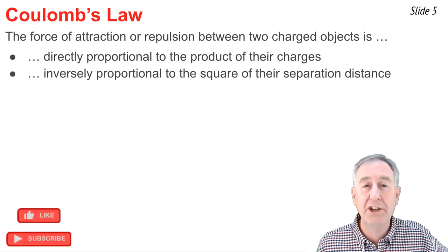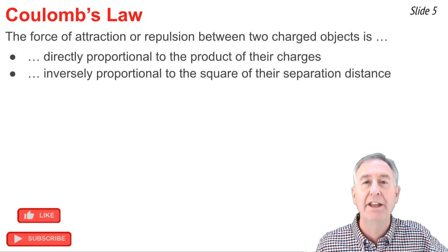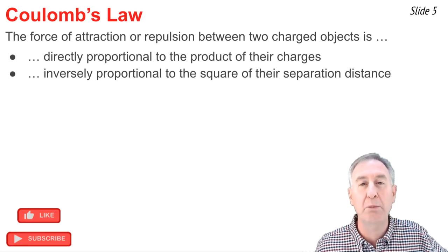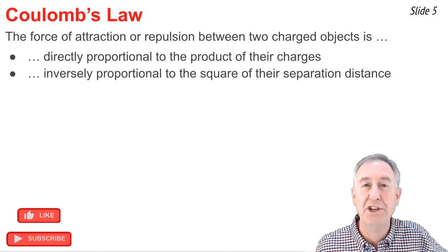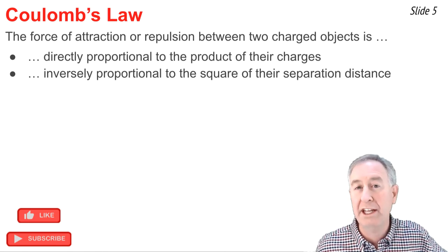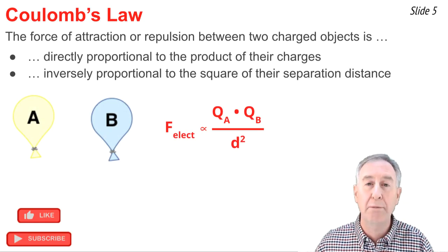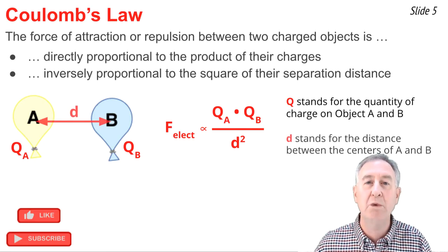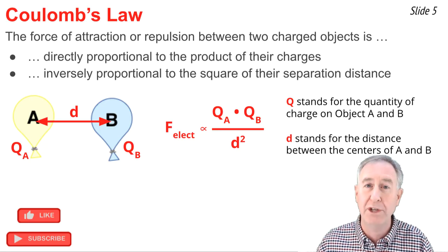Coulomb's law expresses the relationship between the electric force and the variables that affect it. The law can be stated like this. The electric force between two charged objects is directly proportional to the product of their charges and inversely proportional to the separation distance. This proportionality statement can be expressed like this. Here, Q represents the quantity of charge on object A and object B, and D represents the separation distance, which is measured between the two object centers.